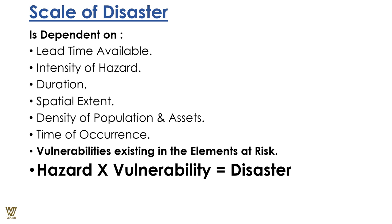The scale of disaster depends on the lead time available — the time given before you can actually react and before the event occurs. The intensity of hazards tells us how catastrophic the impact of a particular hazard can be. Duration is the amount of time of exposure — the longer the duration, the more detrimental the impact. Spatial extent is the periphery of the environment that gets impacted. Other factors include density of population and assets, time of occurrence, and existing vulnerabilities.